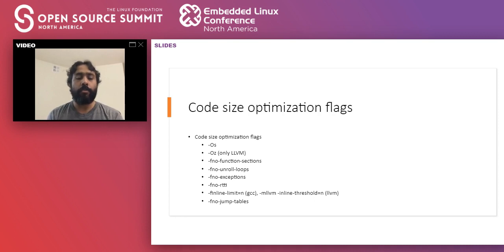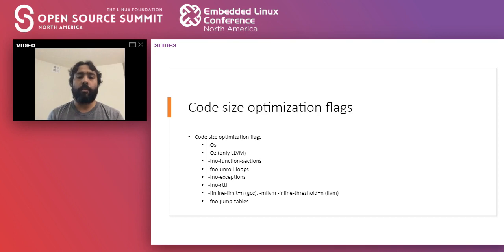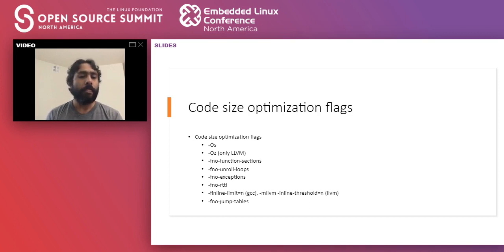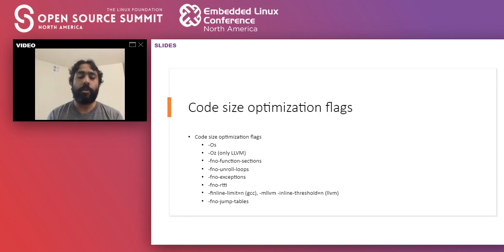The last common flag is -fno-jump-tables. Switch statements can be emitted in assembly in different ways — one is via a jump table, another is as a series of if-else statements. Jump tables are more efficient but in my experience increase code size, which may seem counter-intuitive. Adding -fno-jump-tables may result in a reduction in code size.